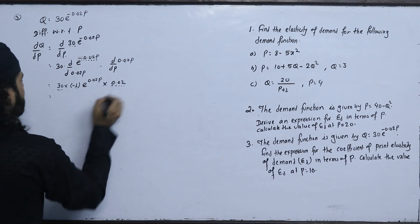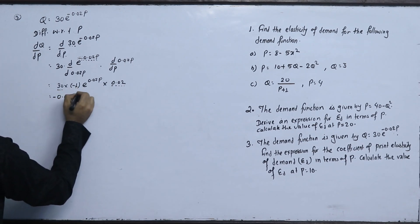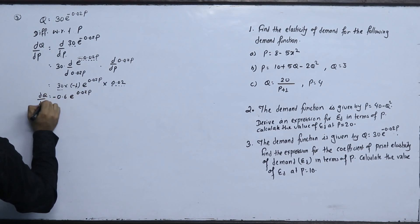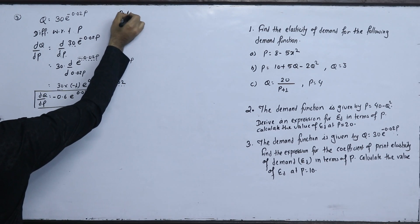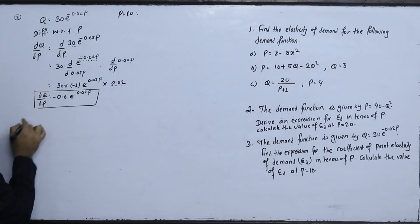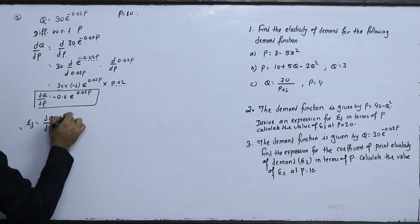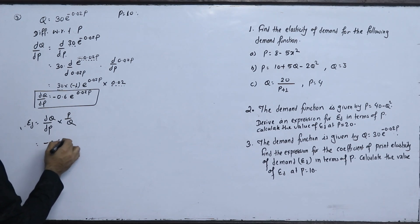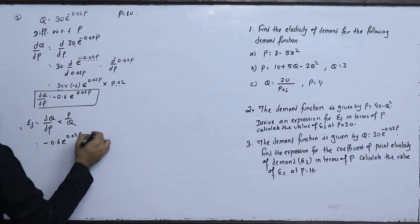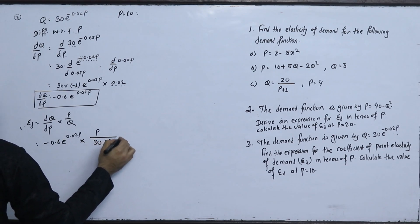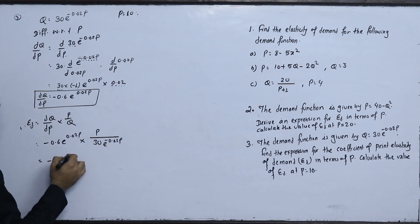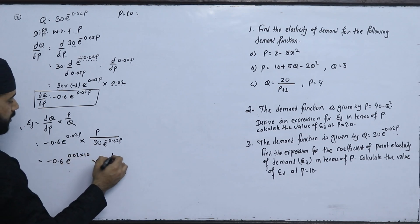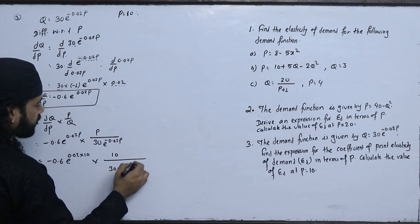So dq/dp equals minus 0.02 into 30e to the power minus 0.02p, which equals minus 0.6 e to the power minus 0.02p. Finding the elasticity of demand at p equals 10: elasticity equals dq/dp into p by q equals minus 0.6 e to the power minus 0.02 into 10 into 10 upon 30 e to the power minus 0.02 into 10.